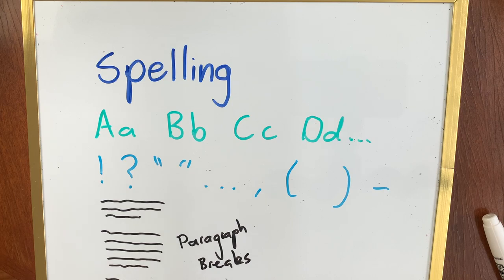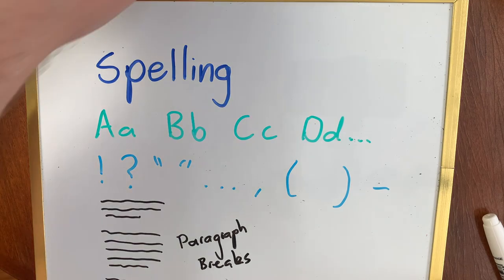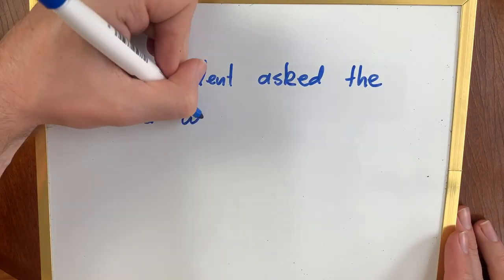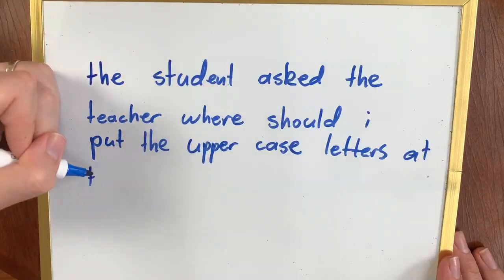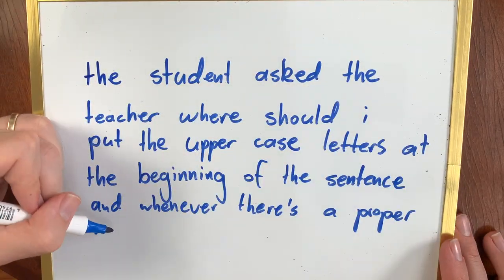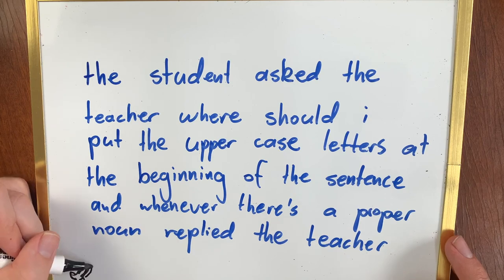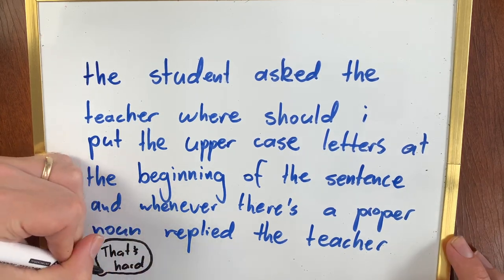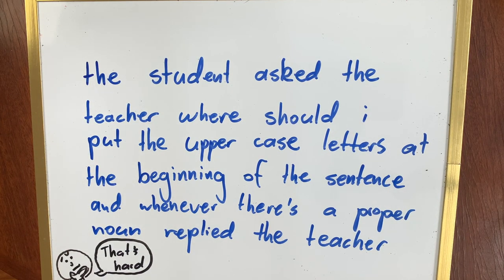Let's take a look at a passage as an example. I'm going to spell things correctly, but I'm going to remove some of the other conventions. The student asked the teacher, where should I put the uppercase letter at the beginning of the sentence and whenever there's a proper noun, replied the teacher. We can understand what's going on here, just. It's really hard work because there aren't any conventions.